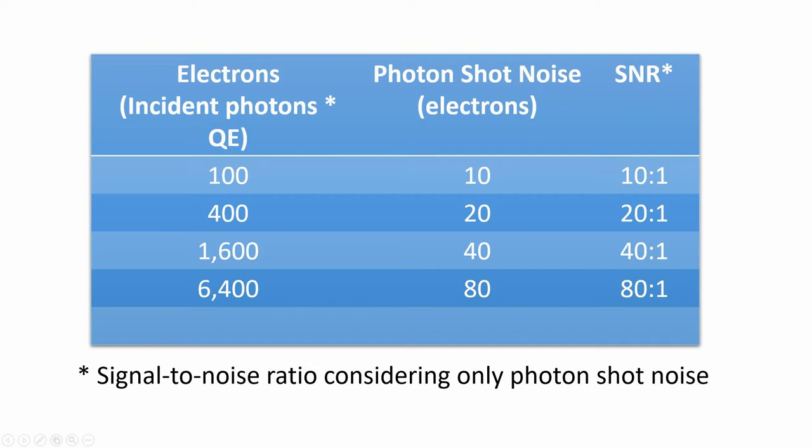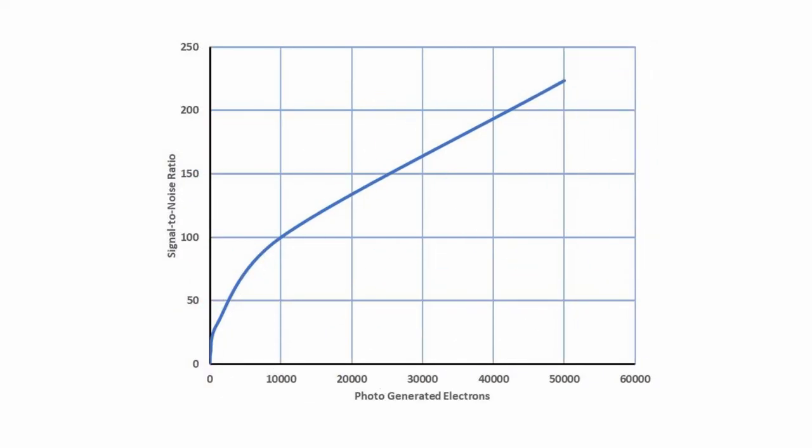Suppose you wanted 8 bits of usable image data. That requires a signal-to-noise of 256 to 1, or 65,000 electrons. Here is what the result looks like graphically.